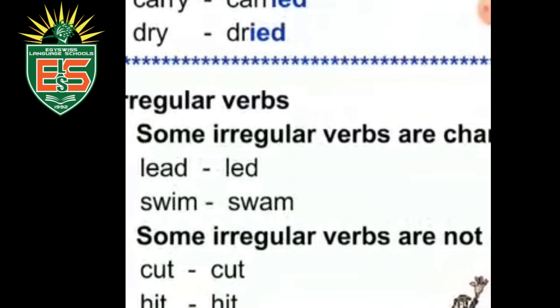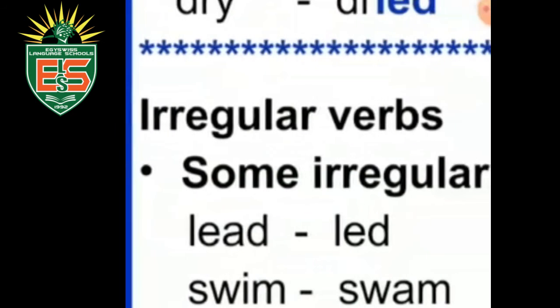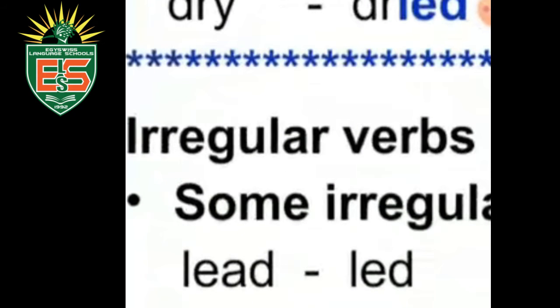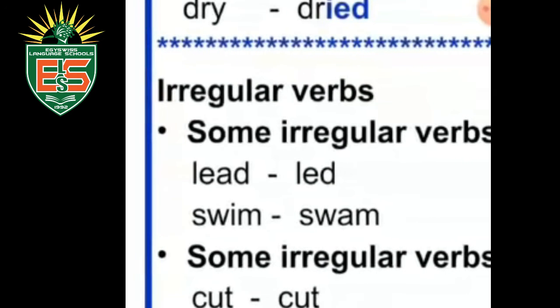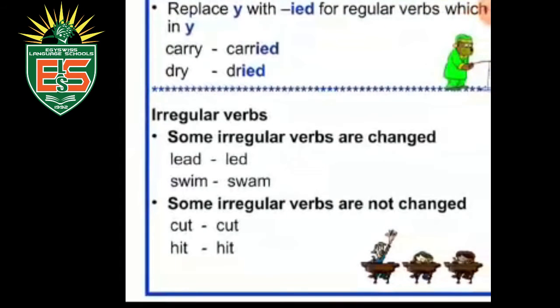The third case: replace -y with -ied for regular verbs ending in -y. If the letter before -y is a consonant, erase the -y and write -ied. For example: 'carry' — r is a consonant, so it becomes 'carried'; 'dry' becomes 'dried'. But if the letter before -y is a vowel, just add -ed. For example: 'play' has 'a' before -y, so it becomes 'played'; 'pray' becomes 'prayed'.